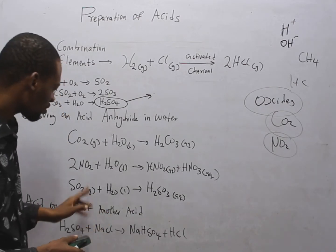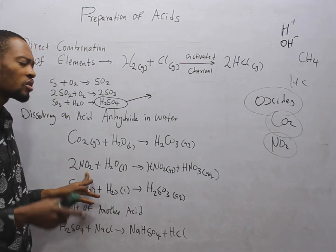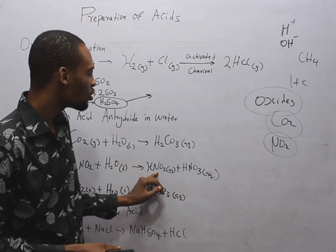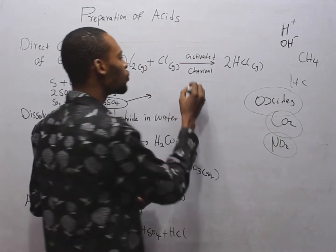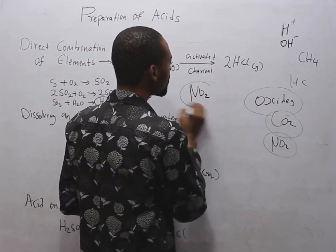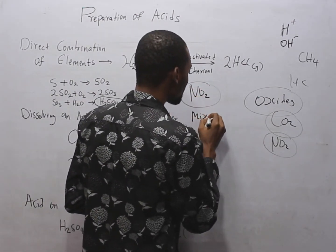Look at something. NO2 dissolves in water to give you two acids, HNO2 and HNO3. This is why NO2 is referred to as mixed acid anhydride.